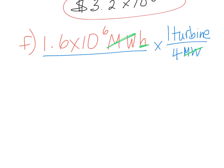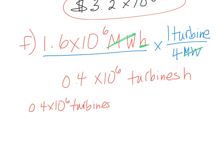Now we can take 1.6 divided by 4 and we're going to get 0.4 times 10 to the 6 turbines. We still have our hours here. Now we can take this number and I'm going to rewrite it over here a little bit smaller because I need some more room.